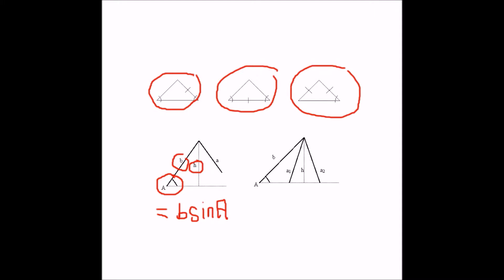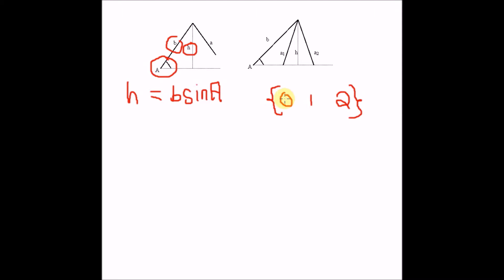Why does that matter? We use this height to determine if there are either zero solutions, one solution, or two solutions with the given sides and angle. This is what we always look for when given an ambiguous case. If H equals the opposite side of the triangle, then there is only one solution possible.